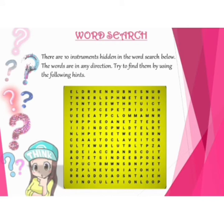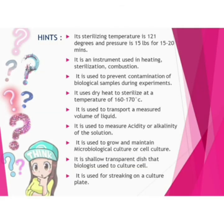Here we have a word puzzle from the previous riddles, and I have some hints for you. Its sterilizing temperature is 121 degrees and pressure is 15 lbs for 15 to 20 minutes. It is an instrument used in heating, sterilization and combustion. It is used to prevent contamination of biological samples during experiments. It uses dry heat to sterilize at a temperature of 160 to 170 degrees Celsius. It is used to transport a measured volume of liquid. It is used to measure acidity or alkalinity of the solution.